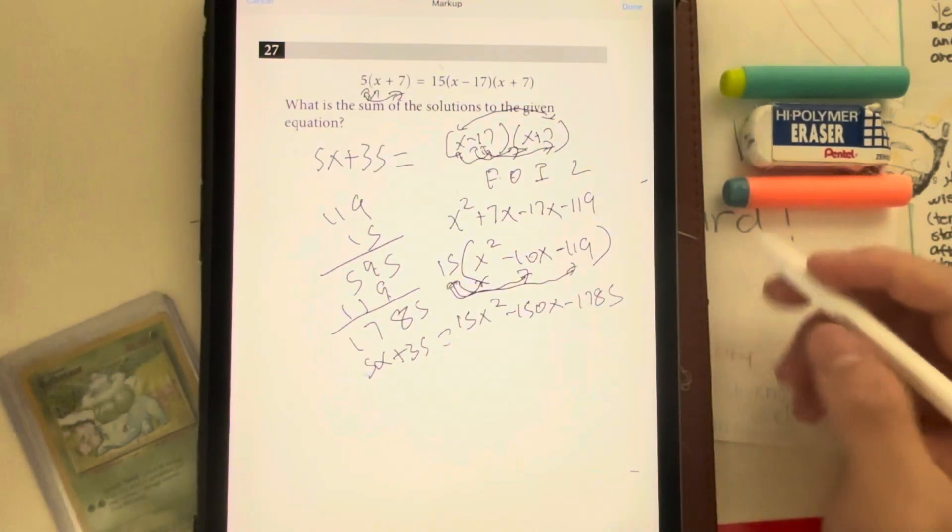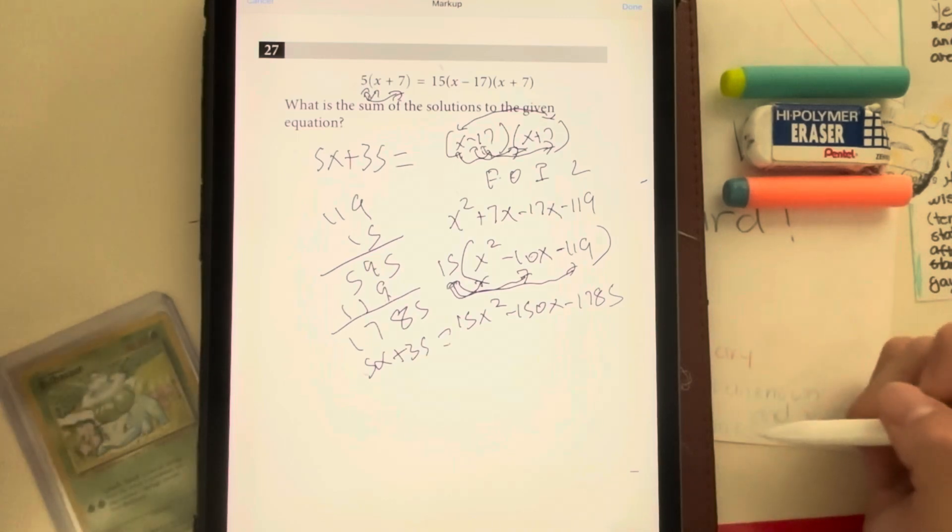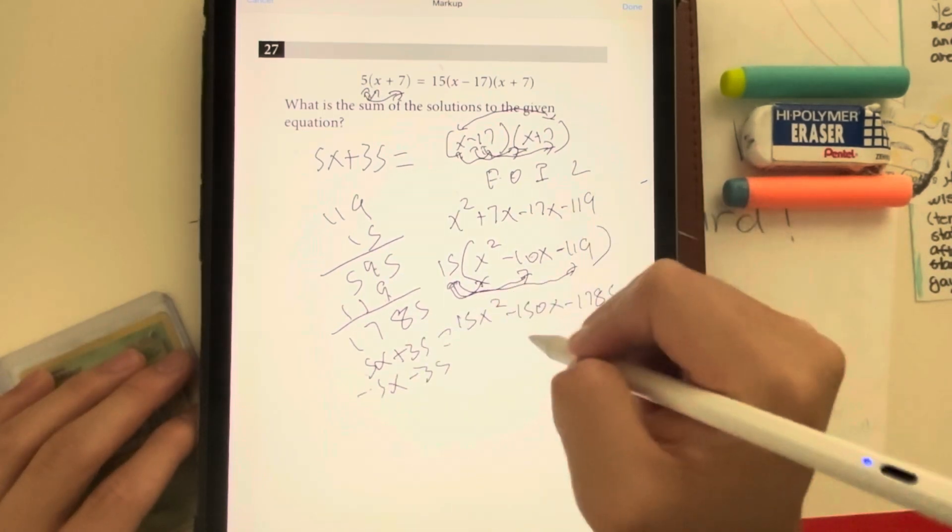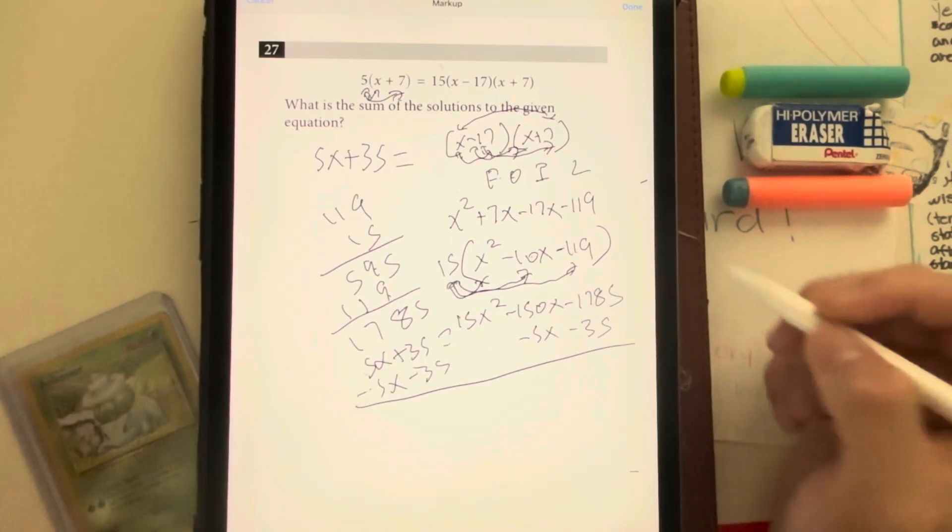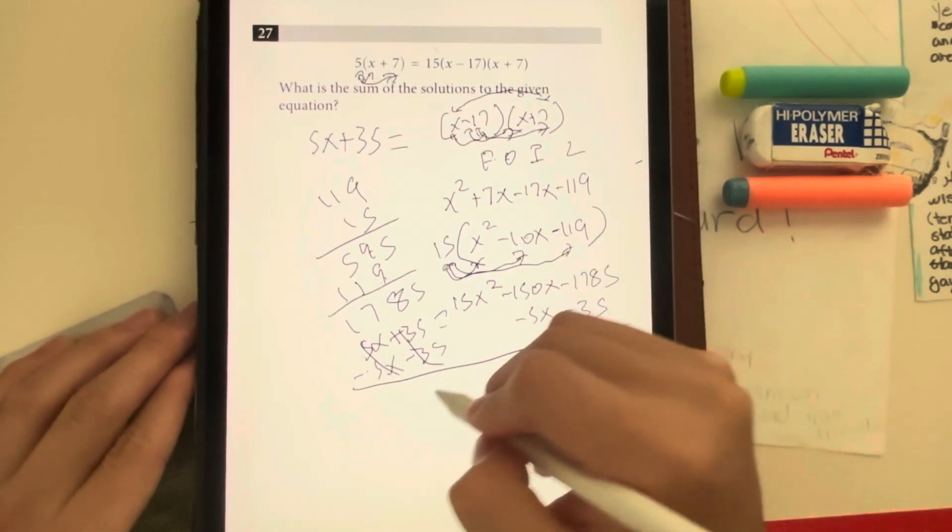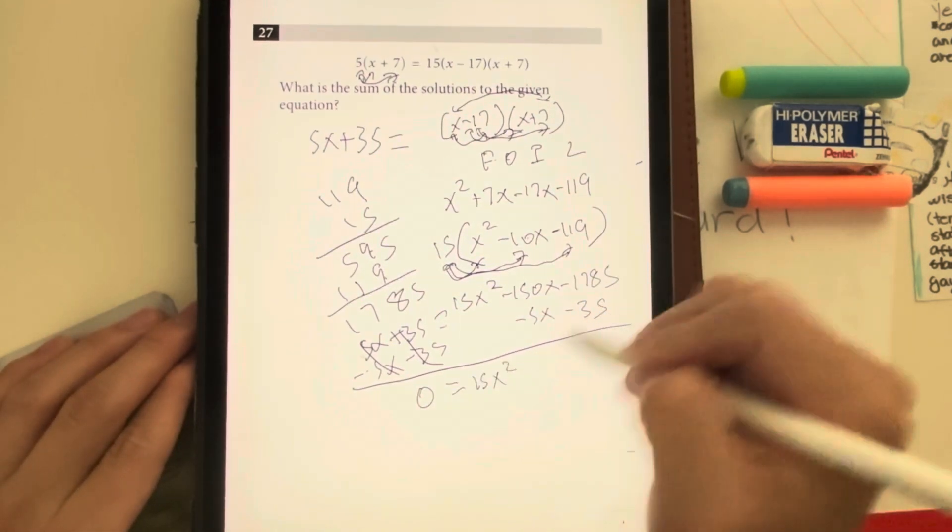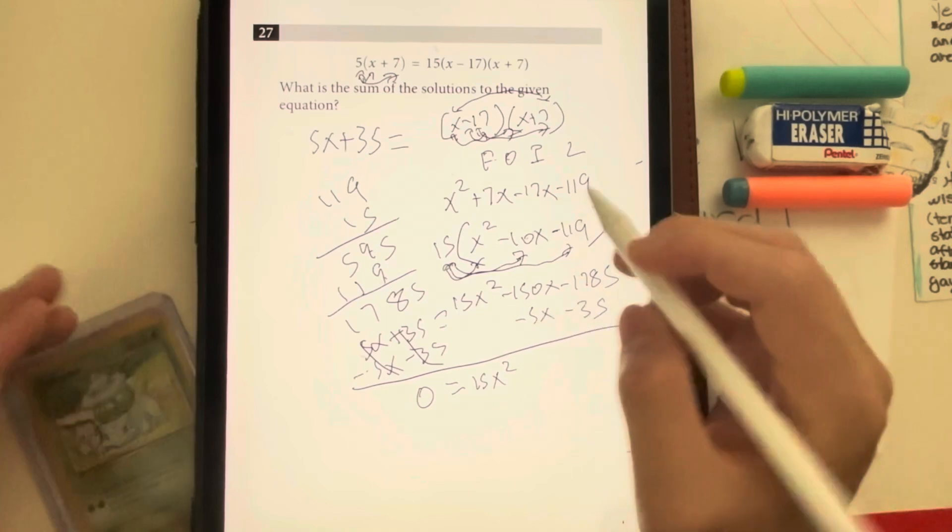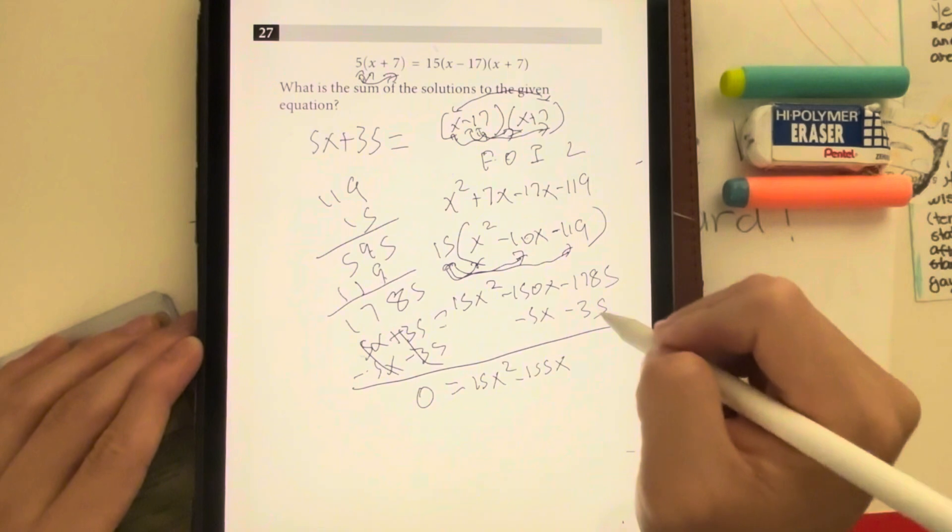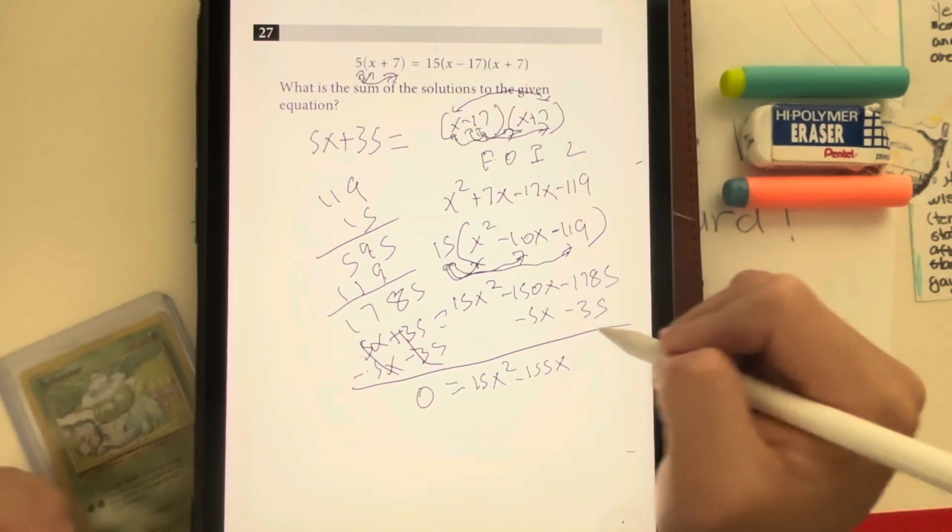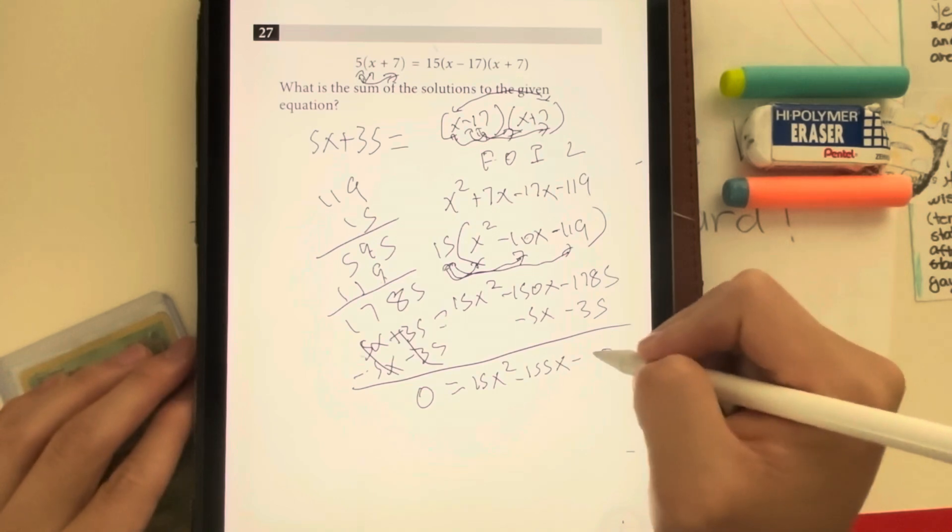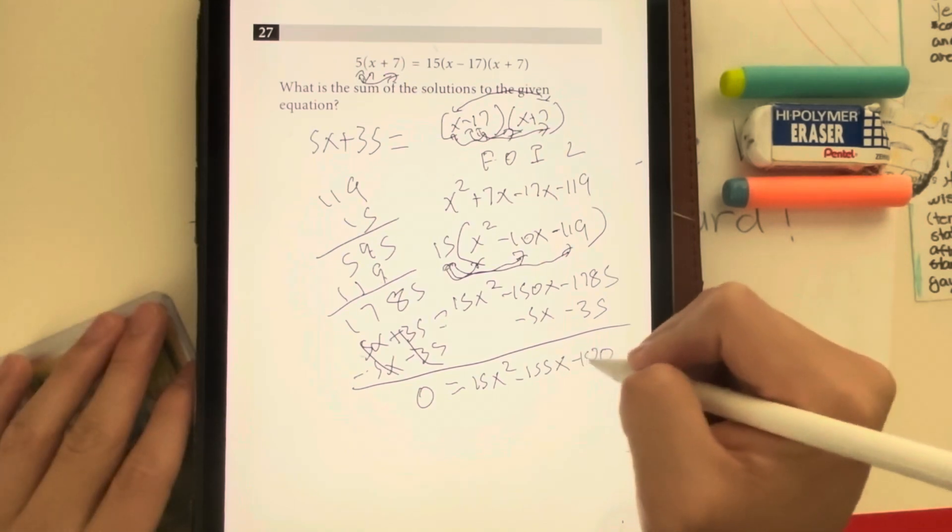I'm going to move everything to one side, so minus 5x minus 35 on both sides. This gives me 5x and 35 to cancel out, giving me 0 is equal to 15x squared. Negative 150x minus 5x gives me negative 155x. And then this negative 1785 minus 35 gives me a total of minus 1820.